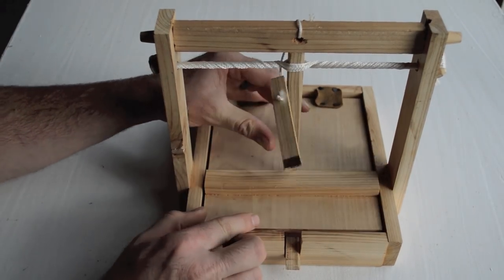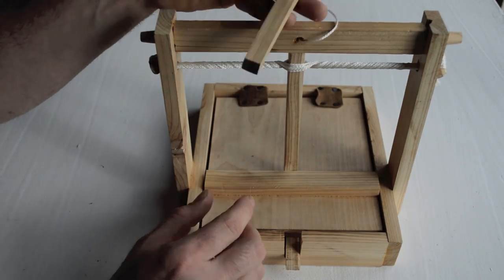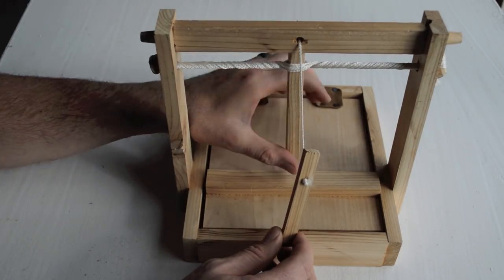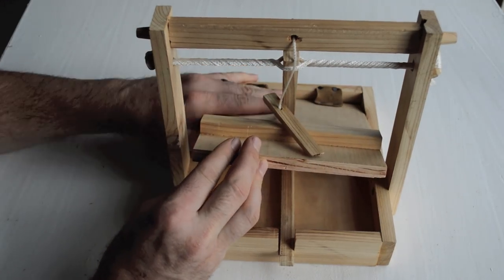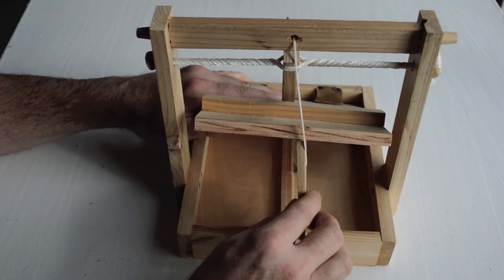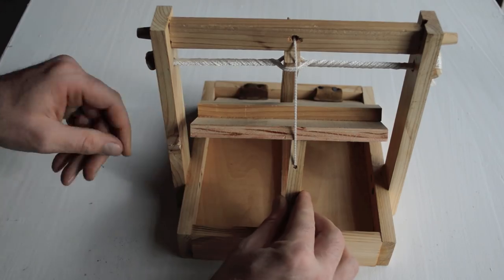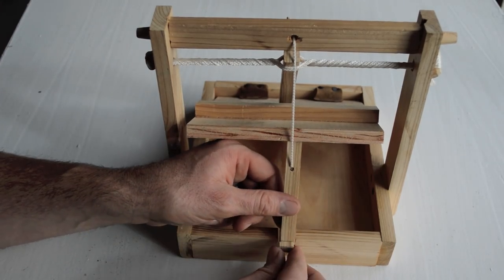Now the second part of this trigger system is this piece up here. It's just a toggle tied to a string and you have to pull this back, lift up the plate, and then you put in your trigger. That wraps around just like that and then you want to hook this bottom piece in like that.